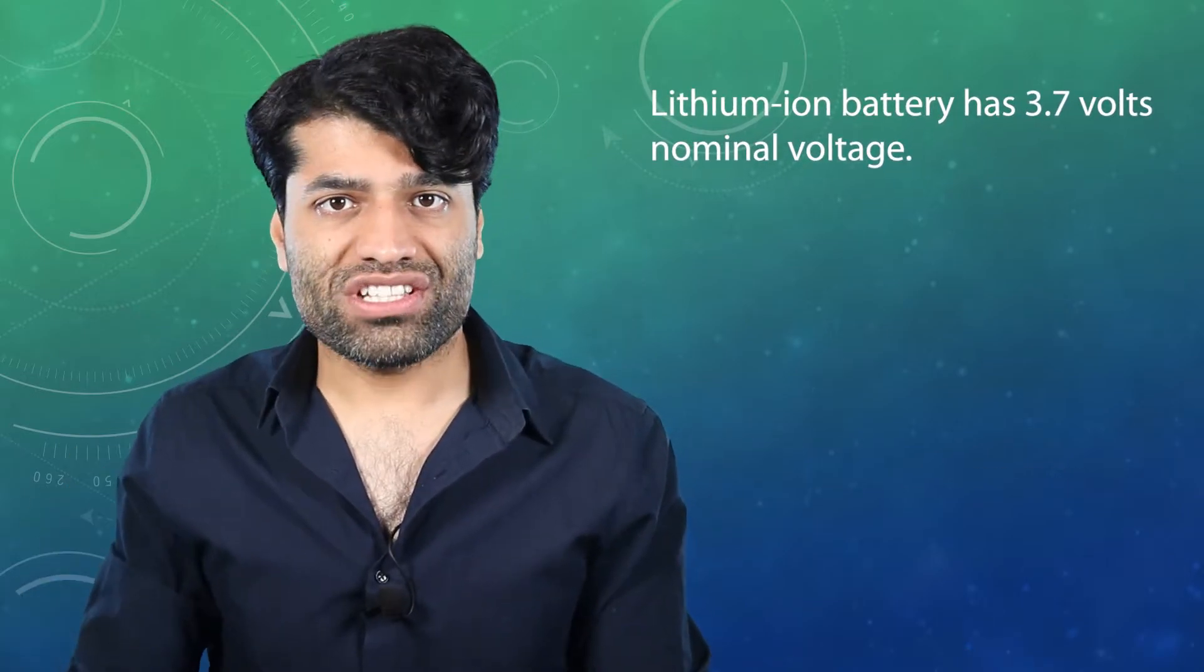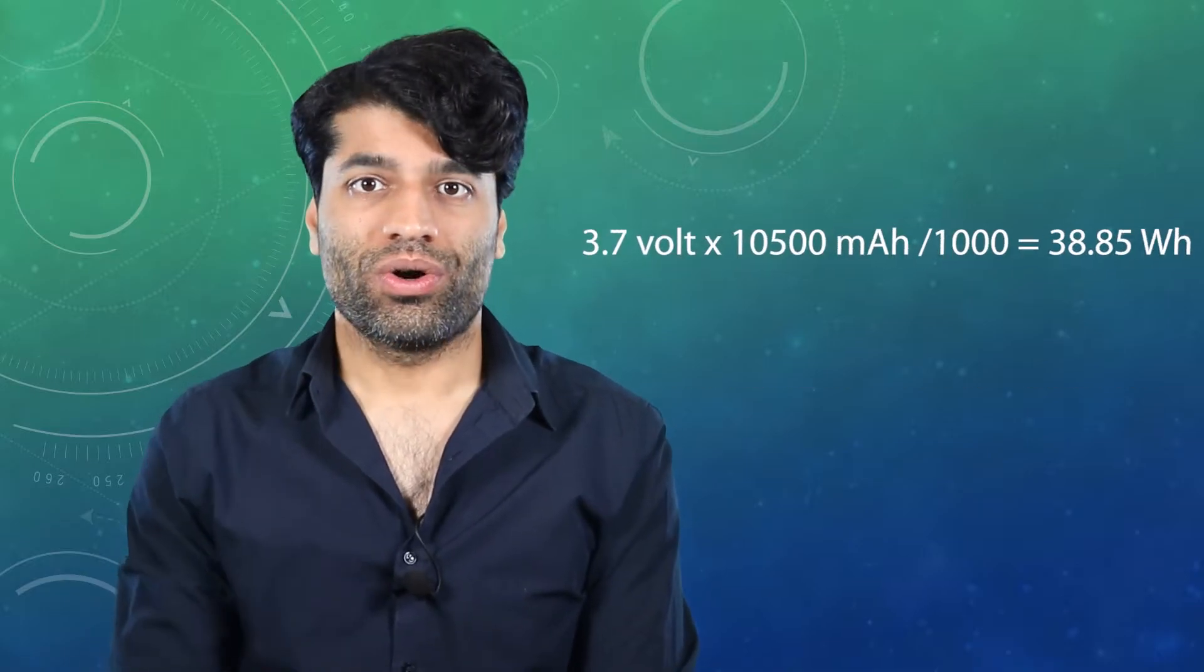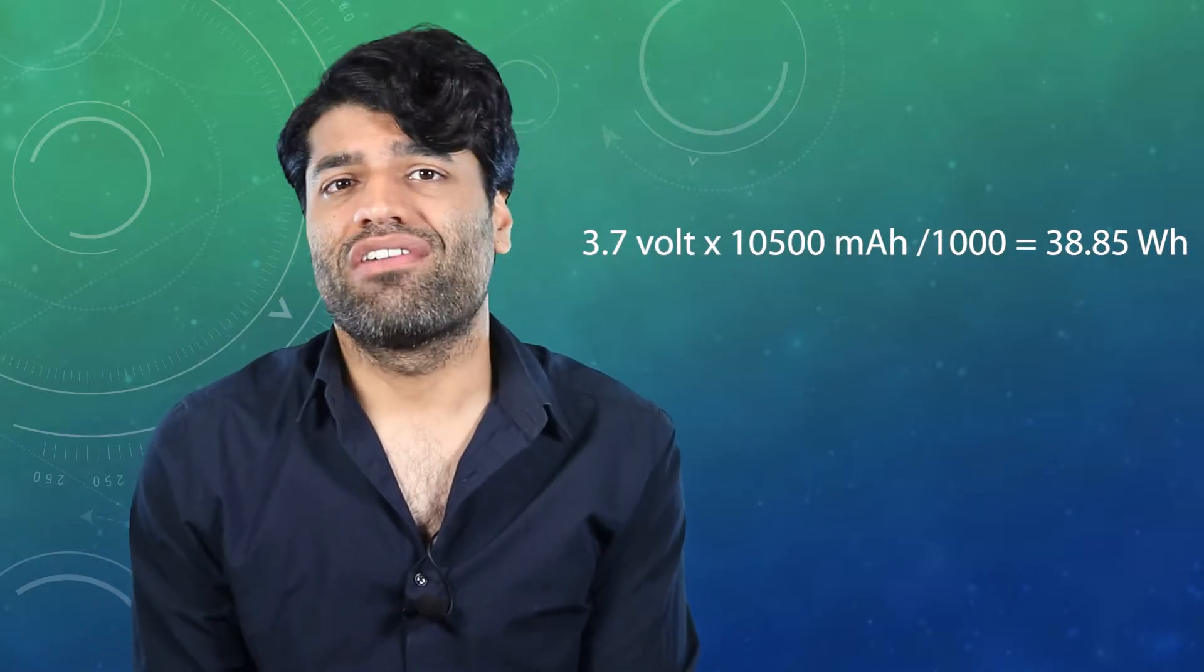Well that's the reason why milli amp hour is not a good indicator of capacity. Lithium iron batteries have a 3.7 volts nominal voltage, therefore 3.7 volts is used to convert milli amp hour to watts hour. So a battery with ten thousand five hundred milli amp hour is marketed to give 38.8 watts hour.